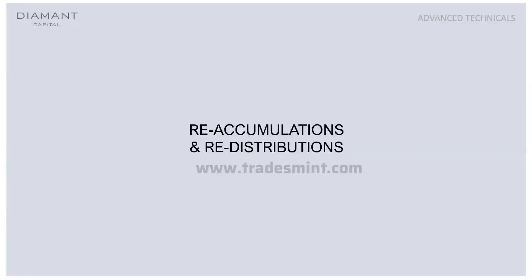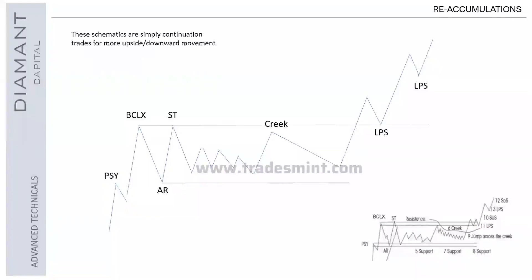Welcome to the next video. Moving on from what we saw previously with accumulations and distributions, as I explained in the market cycle video, there's something called reaccumulation and redistribution. When price gets to a certain point of interest, instead of distributing or accumulating as expected, there's a slightly different schematic — these are simply continuation trades for more upside or more downside.